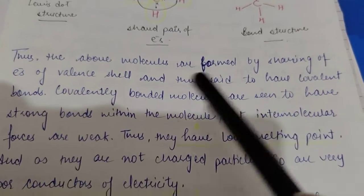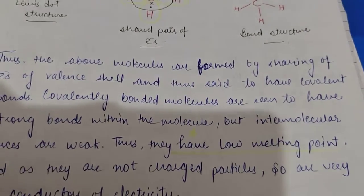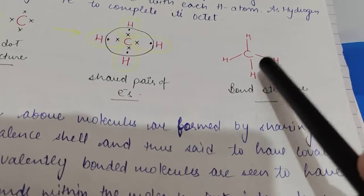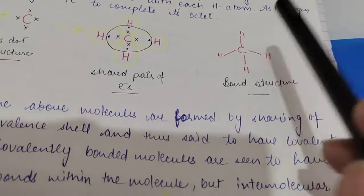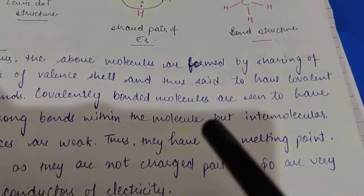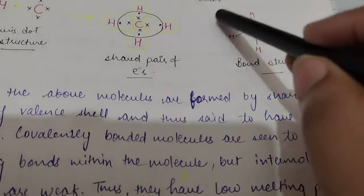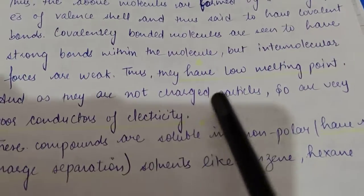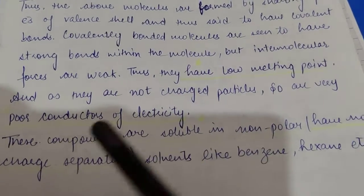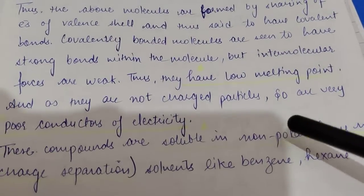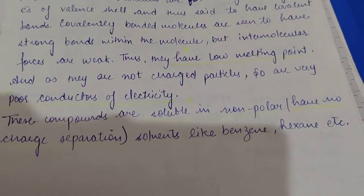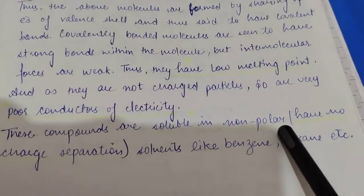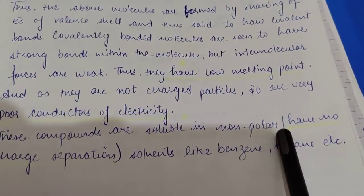These covalently bonded molecules are seen to have strong bonds within the molecule. For example, in CH4, the C-H bonds within the molecule are very strong, but the intermolecular forces — the force between one CH4 unit and another CH4 unit — are comparatively weak. That is why they have low melting points. Moreover, as they do not contain any charged particles, they are poor conductors of electricity.